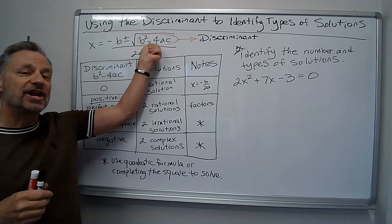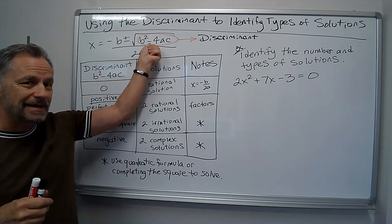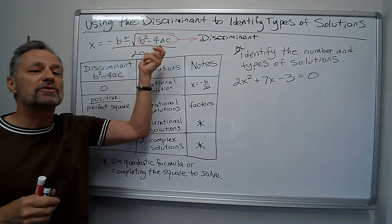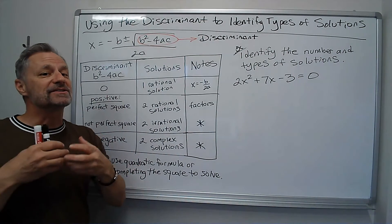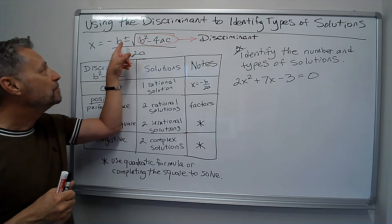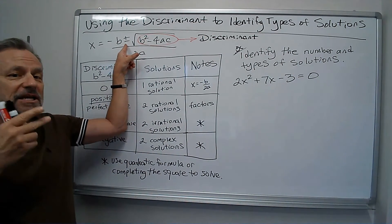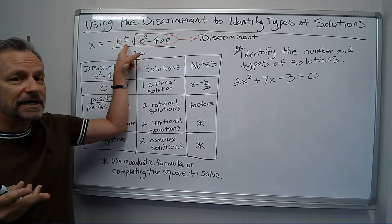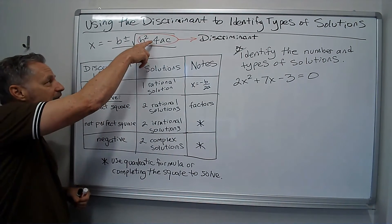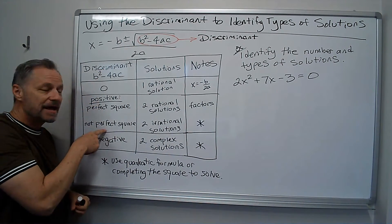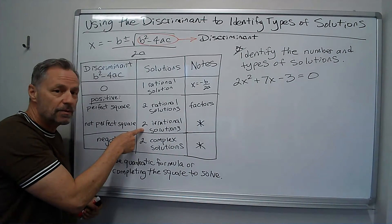Now, if that number is not a perfect square, then I've got the square root of some number that I can't simplify. It's an irrational number, but because of the plus or minus, I'm going to get two answers. They're both irrational. So if the number under there is positive but it's not a perfect square, I get two irrational solutions.